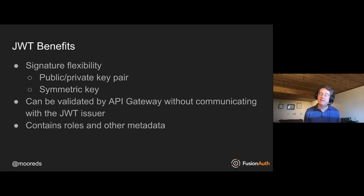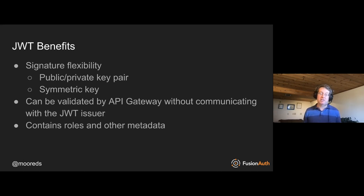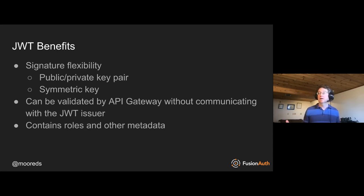Because a JWT is JSON, you can put other things in the object. It doesn't have to be a binary yes-or-no decision like an API key. You can put in roles and other metadata that might be business-domain specific. If we're talking about a to-do app, it might be something like the level of subscription the user has — they may have a premium subscription or a lower-tier subscription.